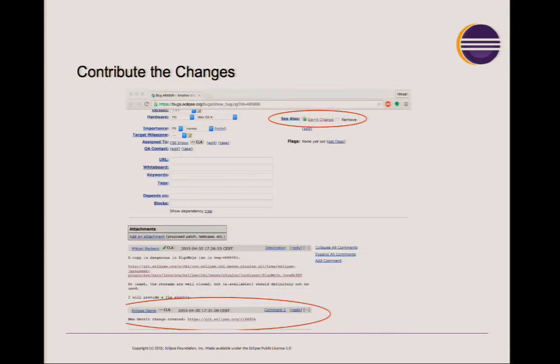If you use our Gerrit instances, we have nice integrations: for any new change submitted to Gerrit, we parse the commit message, and if we find a bug number, we directly add a comment to the bug saying a new change has been submitted, with a link to the review. We also push a new comment if the review has been accepted, but we won't close the bug — it's still up to the project to decide whether the accepted change should close the bug.